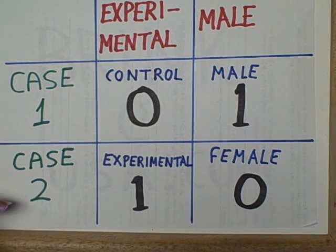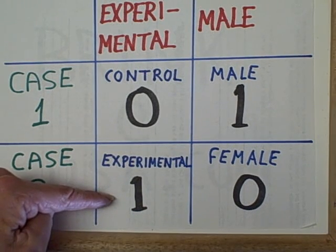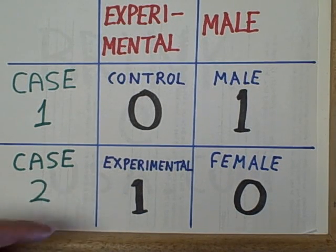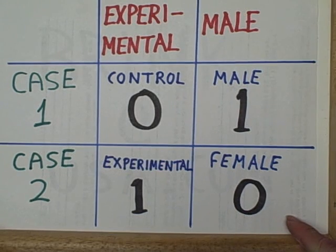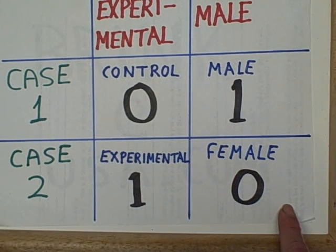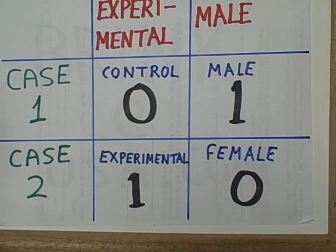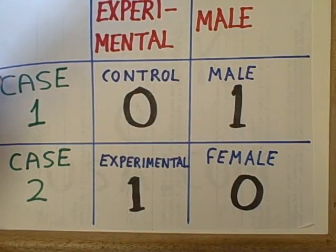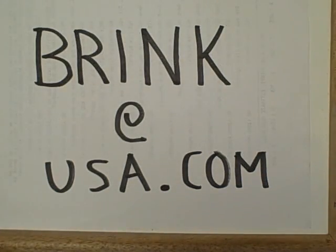Let's now move over into the second row for our second subject, case 2. This particular person was assigned to the experimental group so we're going to enter the number 1 to indicate experimental group. Then we use the right arrow key to enter the data and move over into our next cell to indicate the subject's gender. This subject was not male but was female, and so therefore let's enter a 0. In this way, by entering 1s and 0s, we'll be able to calculate our correlation coefficients and our percentages more easily.